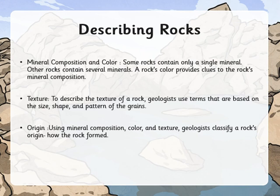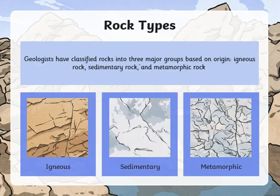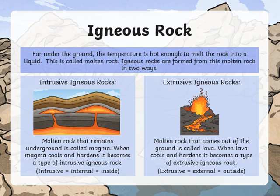Geologists have discovered that there are three rock types: igneous, sedimentary, and metamorphic. We are going to be starting off with igneous rocks. Igneous rocks have a high temperature that can melt the rock into liquid — this is what we call molten rock.